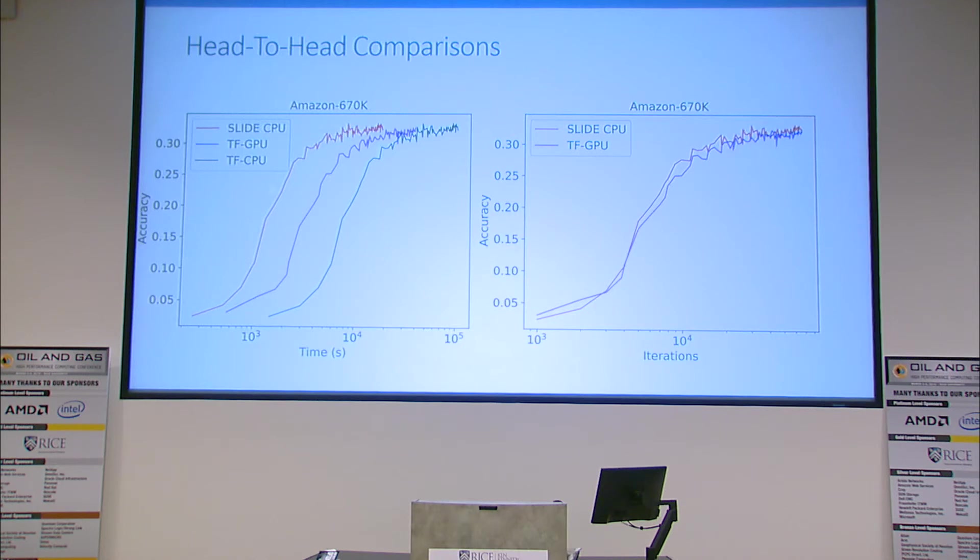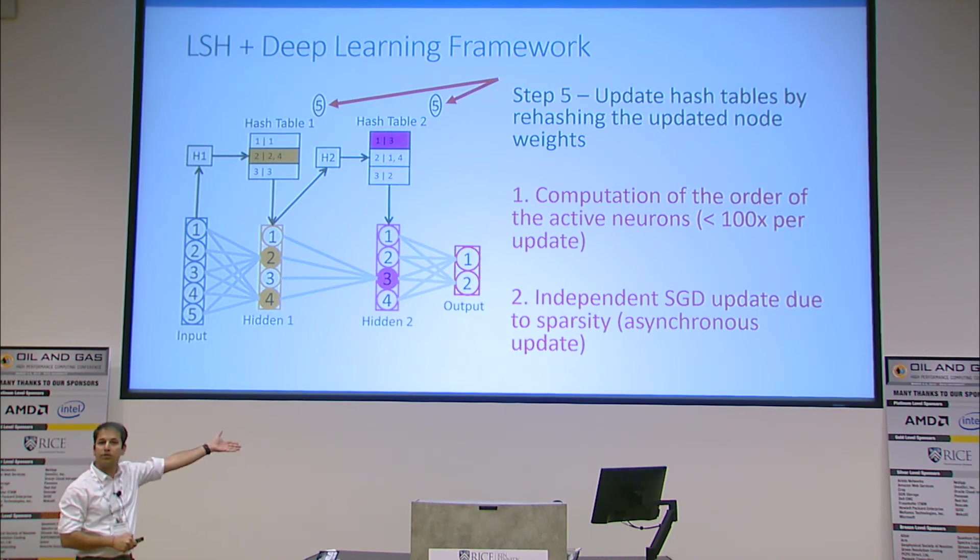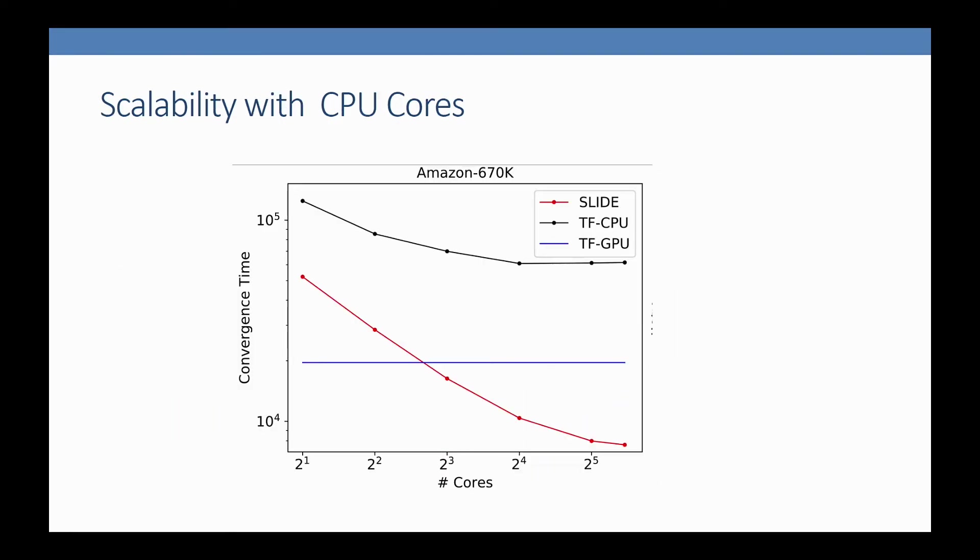If I use the smart algorithm on the same CPU, the red line is basically the smart algorithm on the same CPU. You can see it even outperforms V100. The reason it's outperforming is it's doing very smart computation rather than dumb backpropagation.